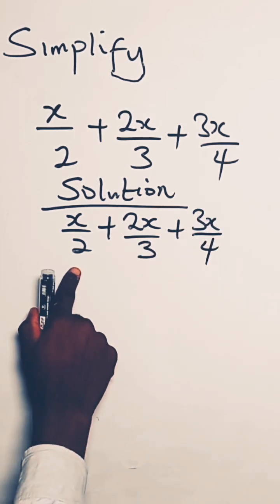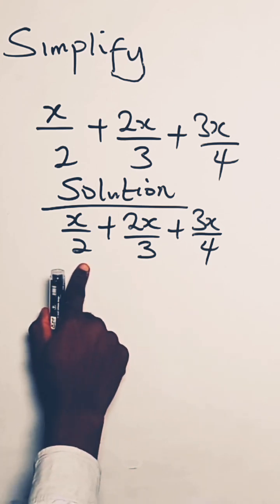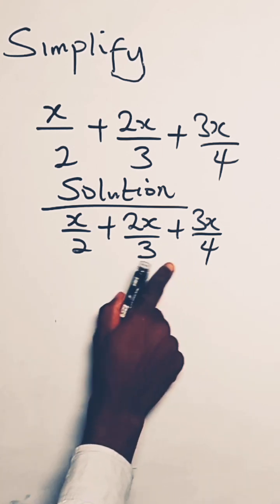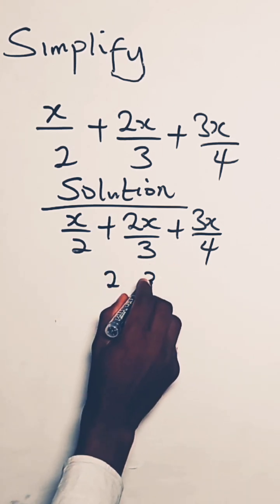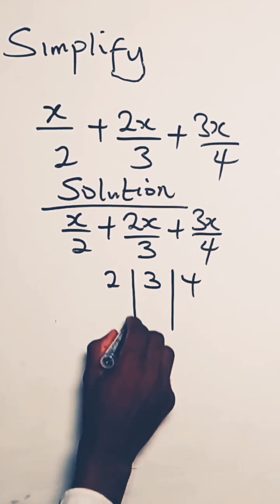So the first thing we do is to look for the least common multiple of the denominator. So how do we do that? So for 2, for 3, for 4 in a column form.